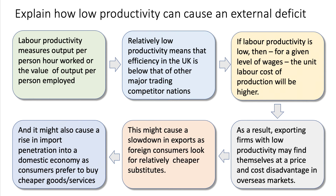Relatively low productivity means that efficiency — for example, in the UK — is below that of our major trading nations, such as Germany or the United States. If labour productivity is low, then — and this is crucial — for a given level of wages, the unit labour cost of production will be higher. Low productivity for given wages will drive up the unit labour cost. As a result, exporting firms with low productivity may find themselves at a price and cost disadvantage in overseas markets, and that can cause a slowdown in export sales as foreign consumers search for relatively cheaper substitutes.